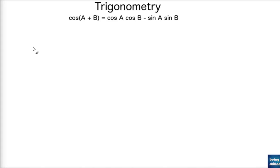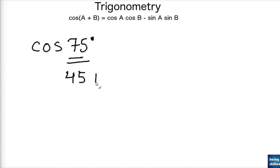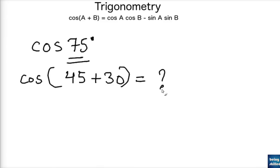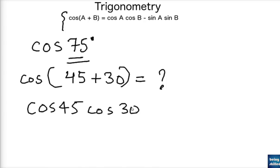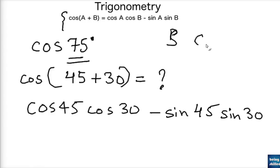In this tutorial we will learn how to calculate the value of cos 75. We can understand that 75 is 45 plus 30, so cos(45+30) is the desired value. For that we have to remember the formula: cos(A+B) equals cos A cos B minus sin A sin B.